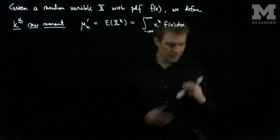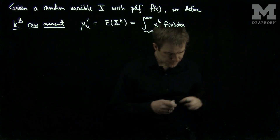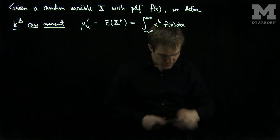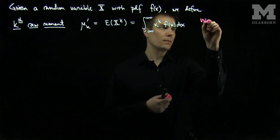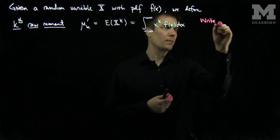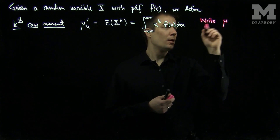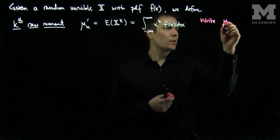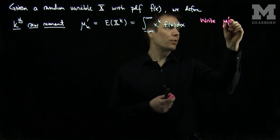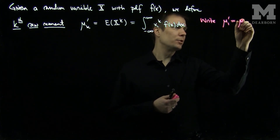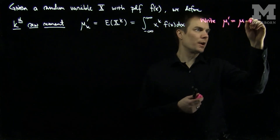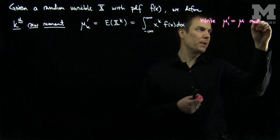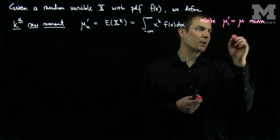Typically we will write mu_1 prime simply just as mu, and this is just the ordinary mean of the random variable.